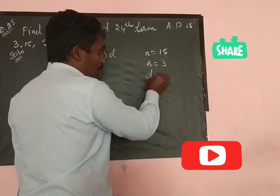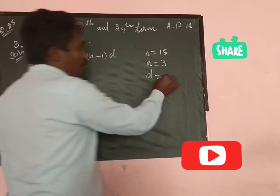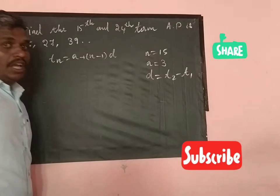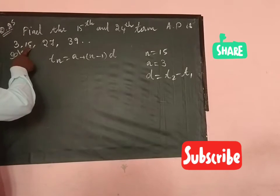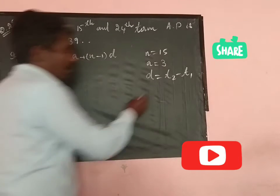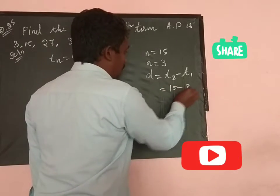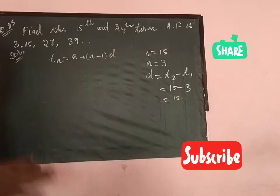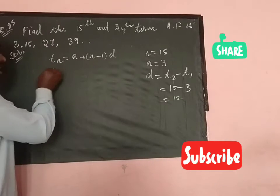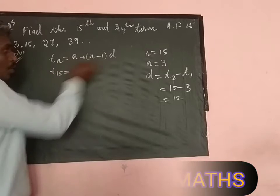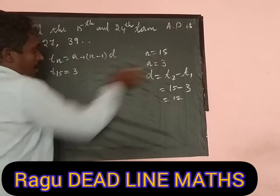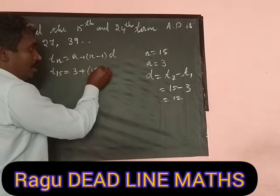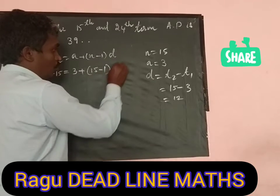The common difference d = t2 minus t1 = 15 minus 3 = 12. Now substituting: t15 = 3 + (15 - 1) × 12.